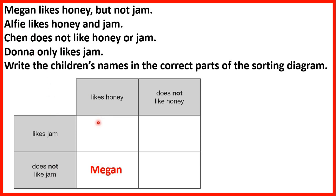Now let's find where we can write Alfie. He likes honey and jam, so we can write Alfie here because going up that shows he likes honey and going across that shows he likes jam as well. Now Chen does not like honey or jam, so Chen will need to be in the column for does not like honey and in the column for does not like jam. So we can write Chen here because he does not like honey and does not like jam.